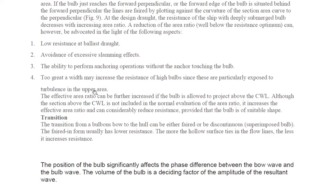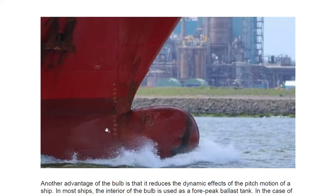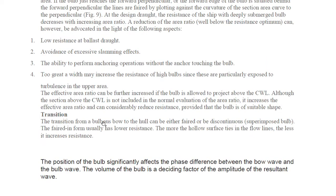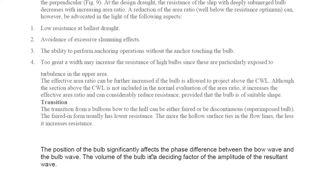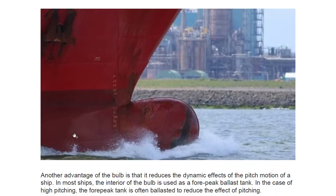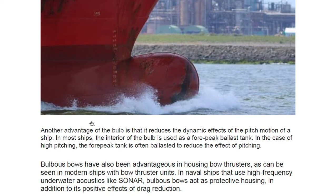The position of the bulb significantly affects the phase difference between the bow wave and the bulb wave. The volume of the bulb is the deciding factor of the amplitude of the resultant wave. Sometimes the bulb is half-submerged and sometimes it is completely submerged below the waterline.